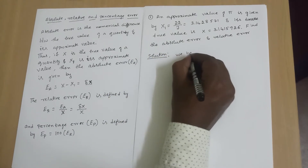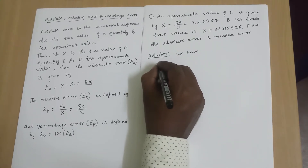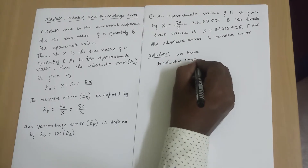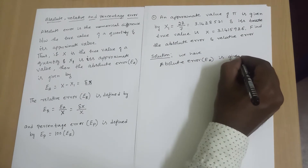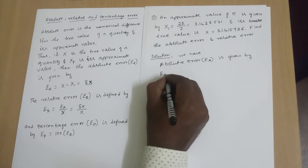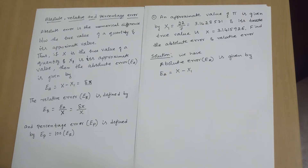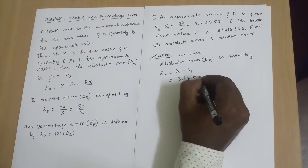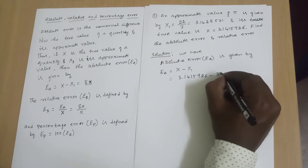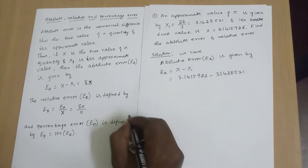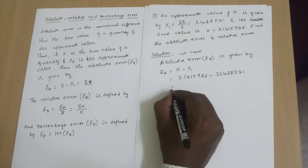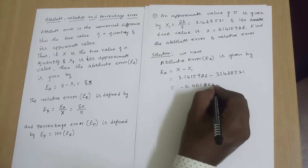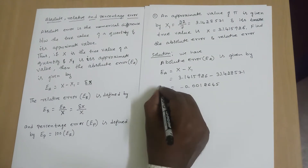So, the absolute error formula: Ea is given by capital X minus X1, which is 3.1415926 minus 3.1428571. The difference is minus 0.0012645. So this is your absolute error.